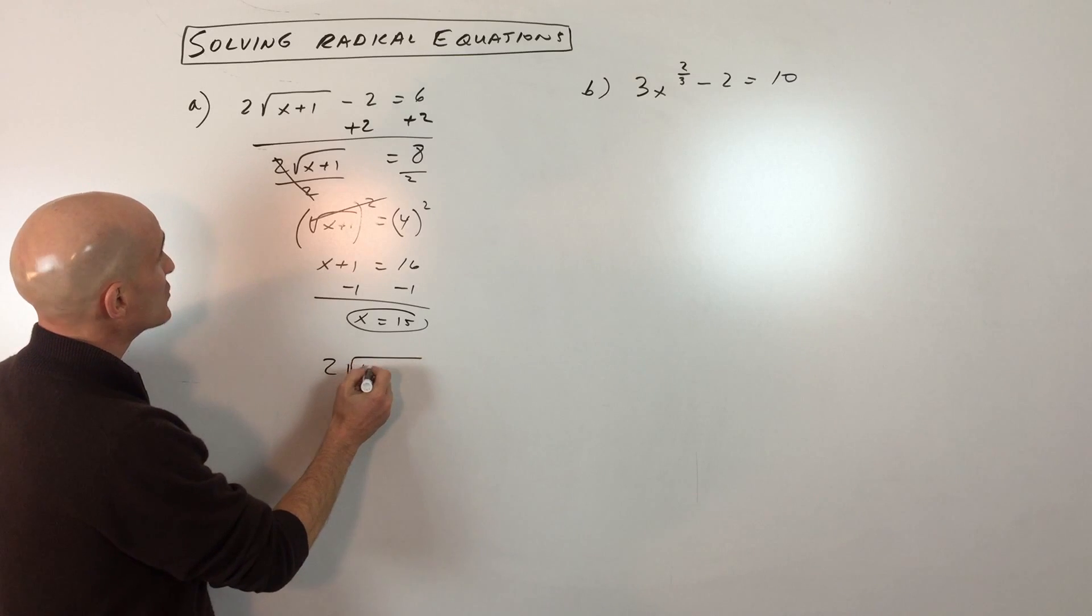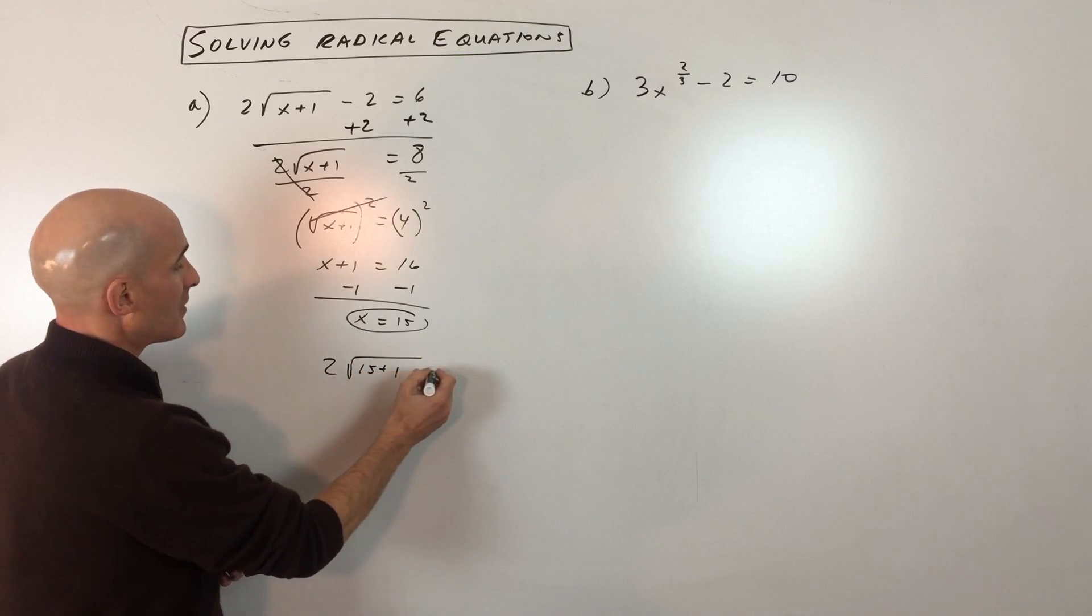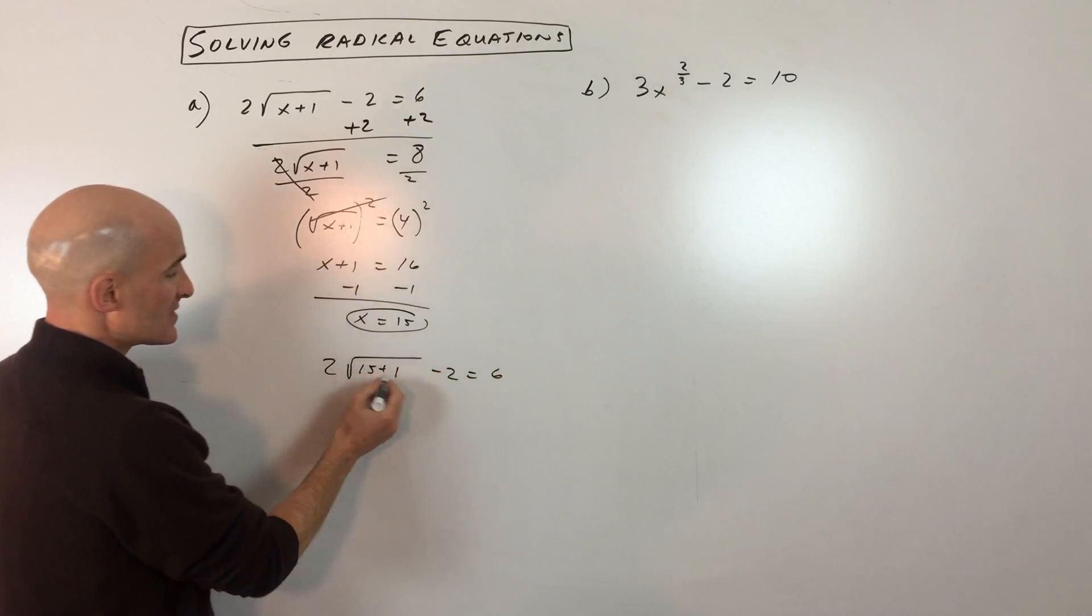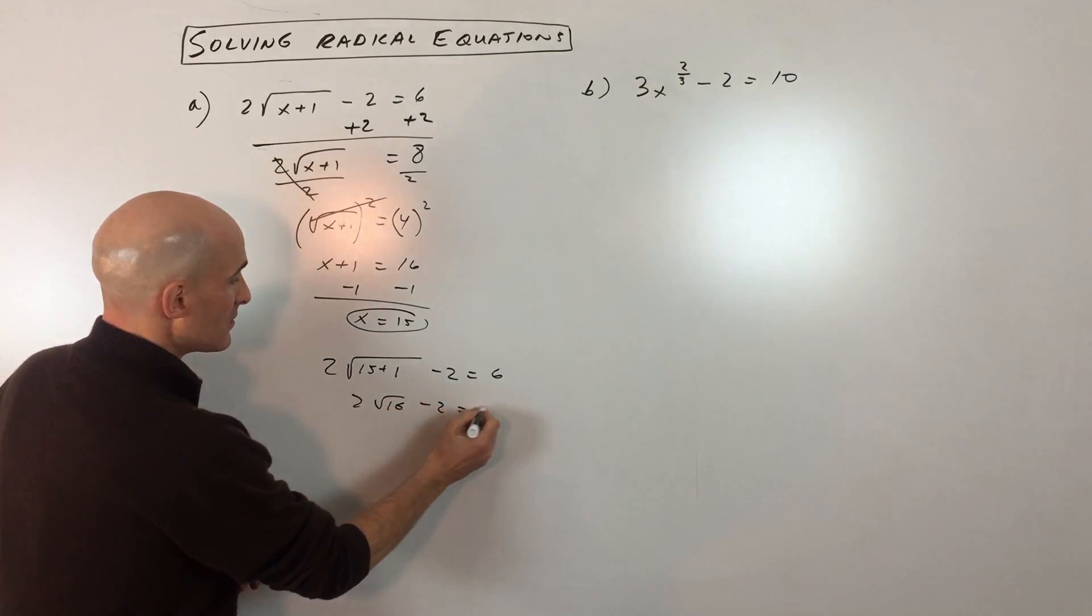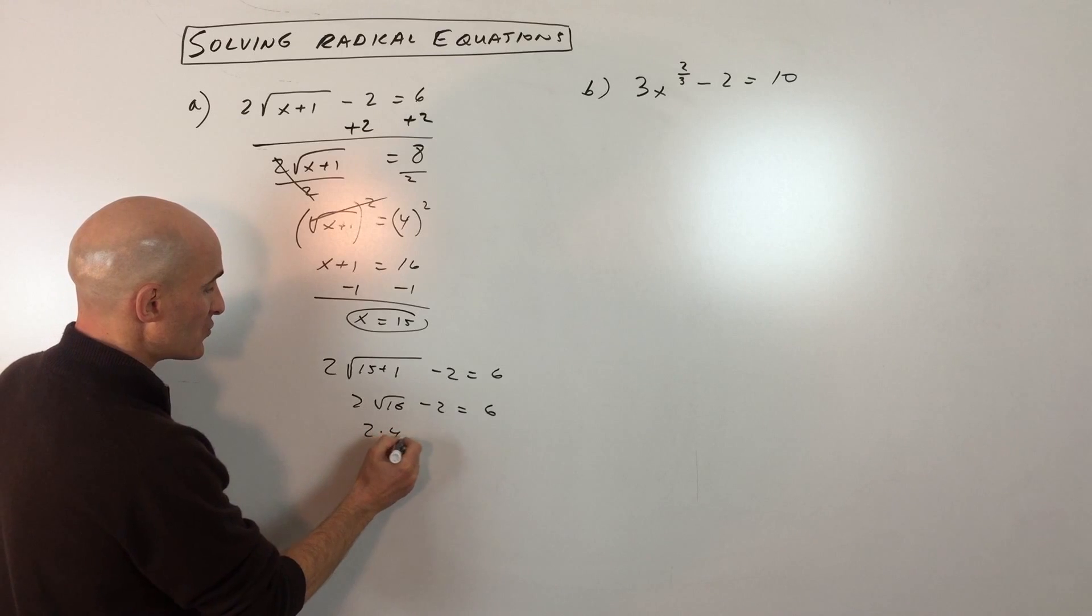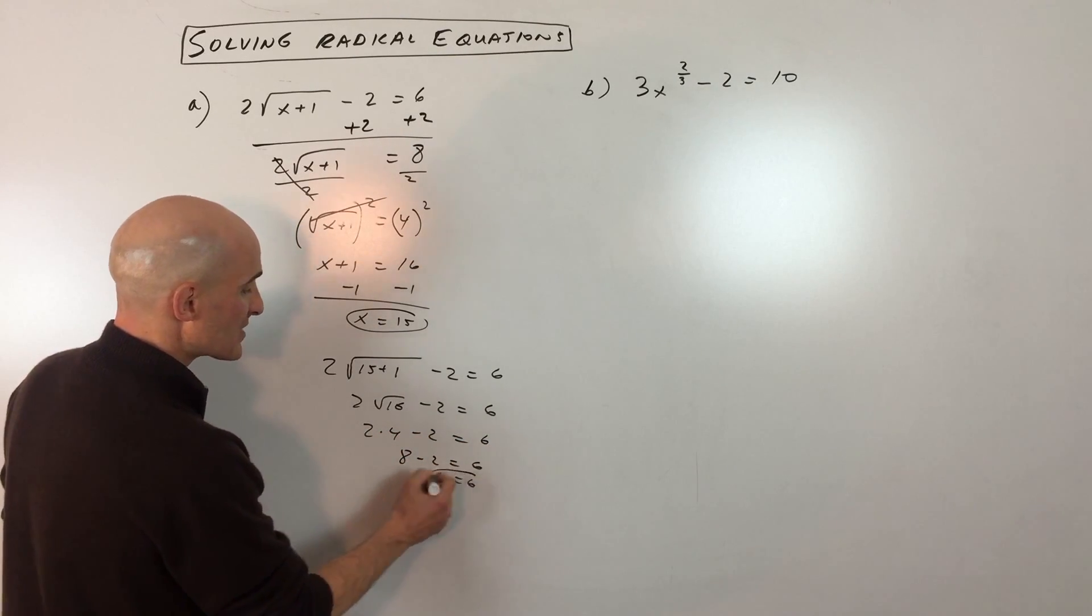So this is going to be 15 plus 1, minus 2 equals 6. So this is 16. Square root of 16 is going to give us 4, so that's 2 times 4. And that's going to be 8 minus 2. And you can see 6 equals 6.